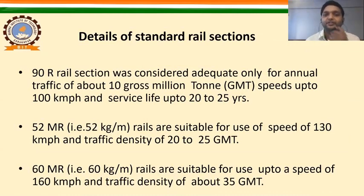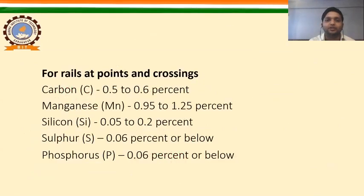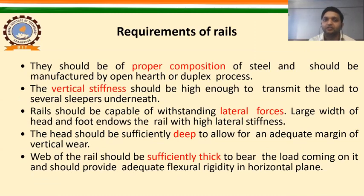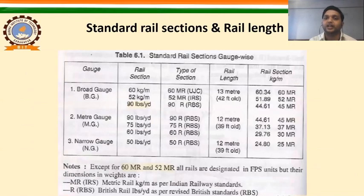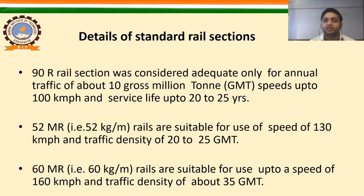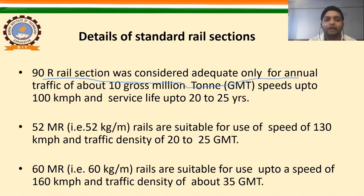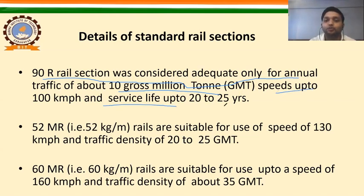Now the details of standard rail sections. The 90R rail section was considered adequate only for annual traffic of about 10 gross million tonnes (GMT), speeds up to 100 km per hour, and service life up to 20 to 25 years. The 52 MR (52 kg per meter) rails are suitable for use at speeds of 120 km per hour and traffic density of 20 to 25 GMT.